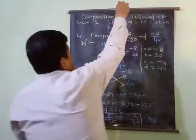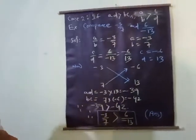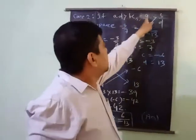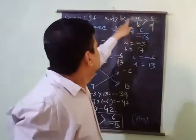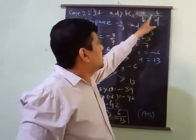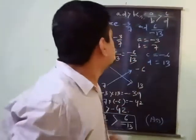In the second case, we have discussed in the rational number A by B and C by D, if AD is greater than BC. Case 2: in the rational number A by B and C by D, if AD is greater than BC, then A upon B is greater than C upon D, then this rational number will be greater than this rational number.